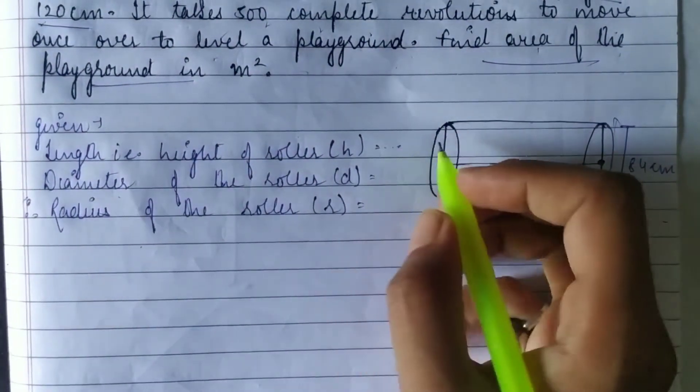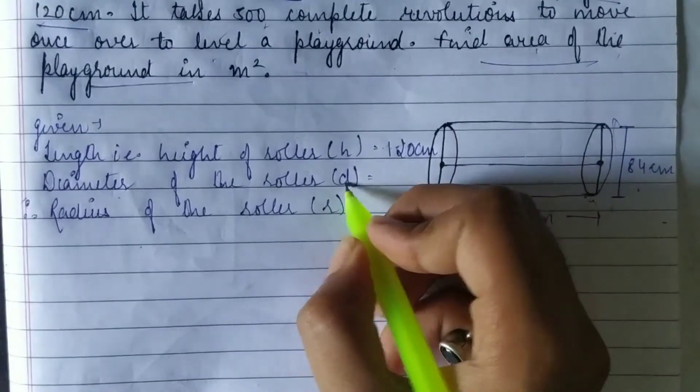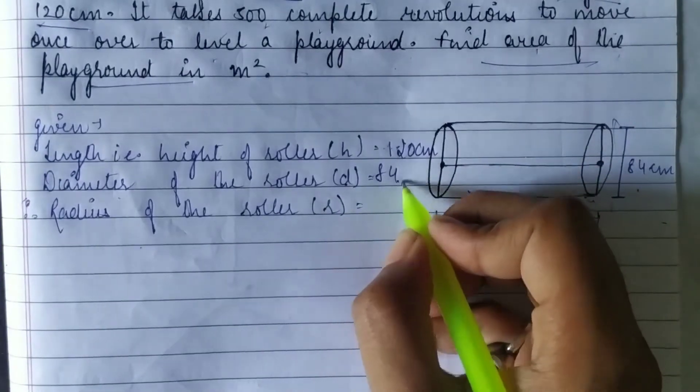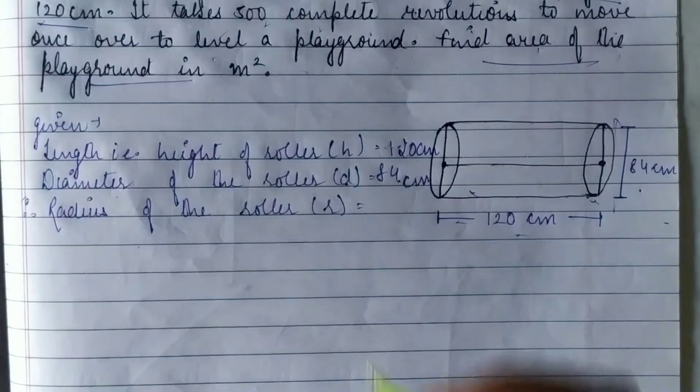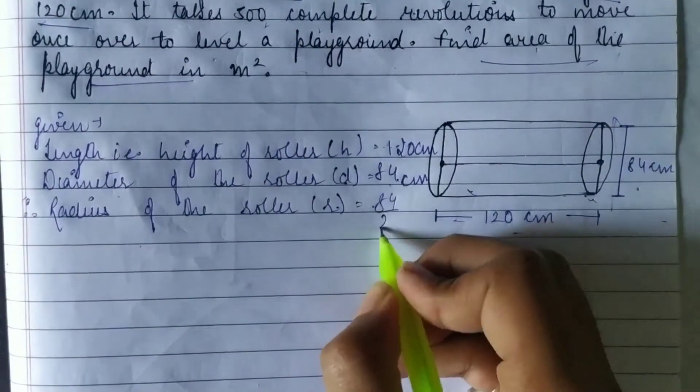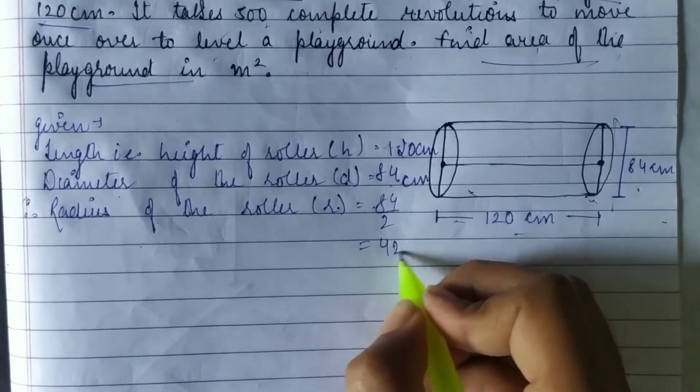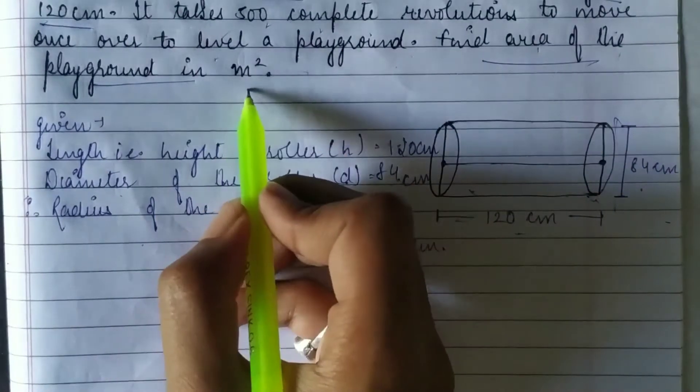Given: length of the roller, which means height, is 120 cm. Diameter is 84 cm, which means radius is half of diameter, so 42 cm is the radius. We have to find the answer in meter square.